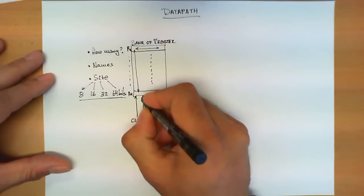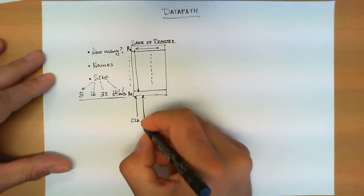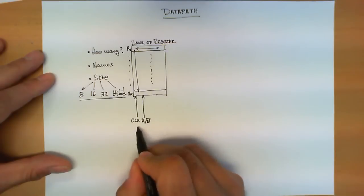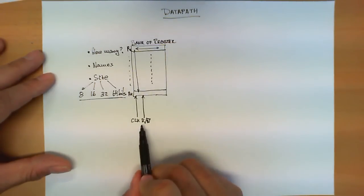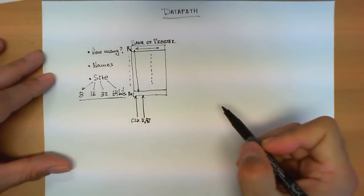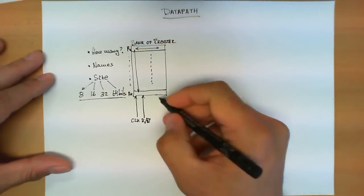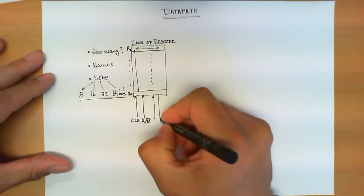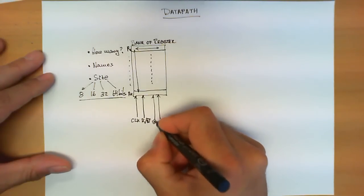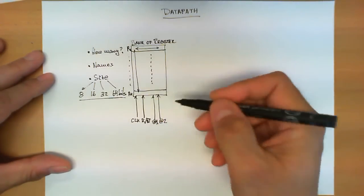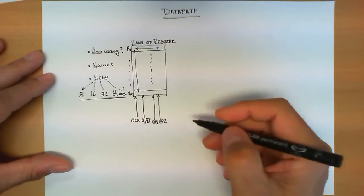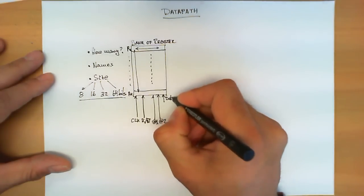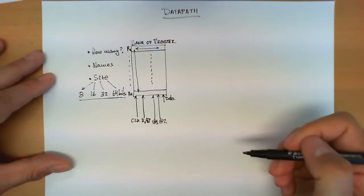Another very important control signal is the one stating if the operation we want to do in this bank of registers is reading a value or writing a value, which is typically represented by the abbreviation read slash W with a bar on top. Depending on the bank of registers, if it can read two registers at the same time, we put address one and address two as the addresses of the registers to be read. Another control entry is the data that is written to the bank of registers.